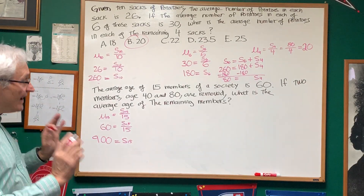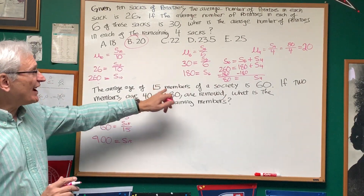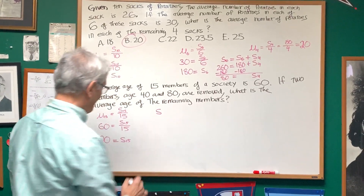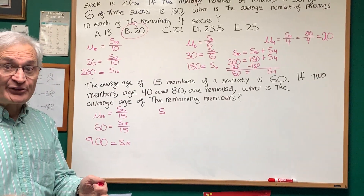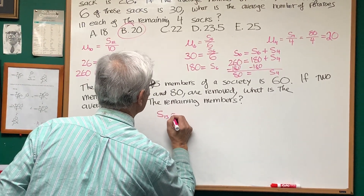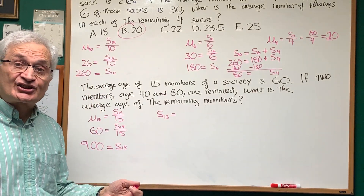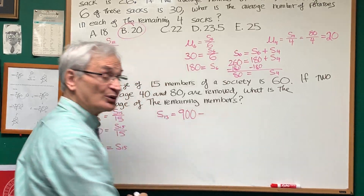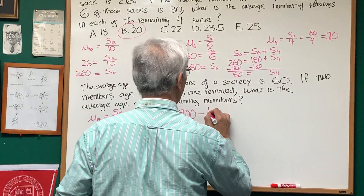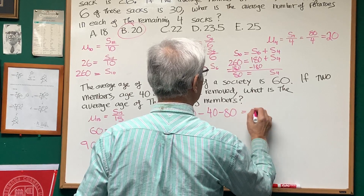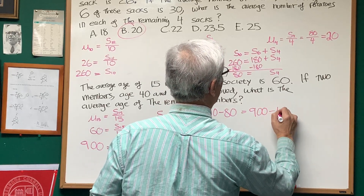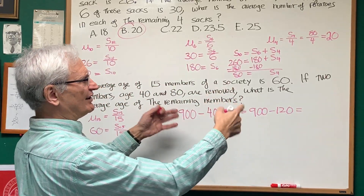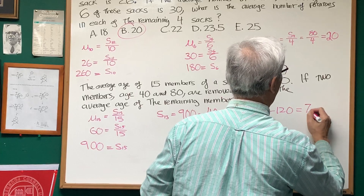Two members, age 40 and 80, are removed. That means we only have 13 members remaining. The sum of the ages of those 13 members is 900 minus 40 minus 80. So this is 900 minus 120, which is 780.